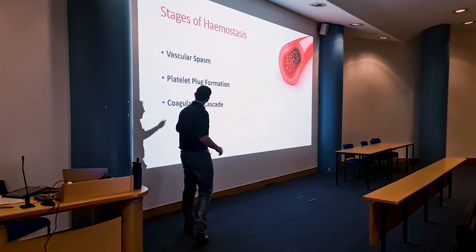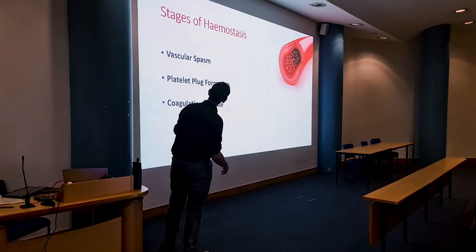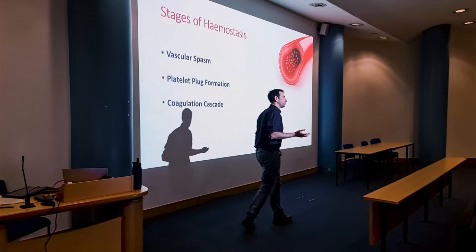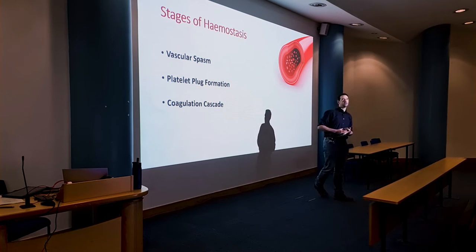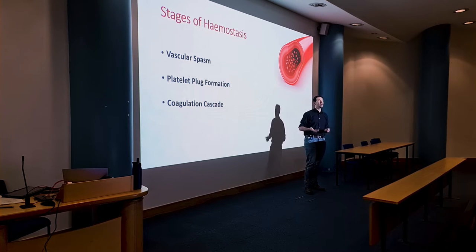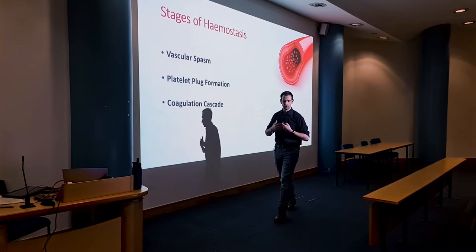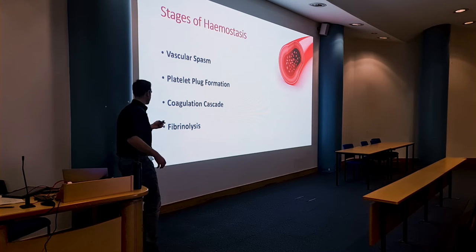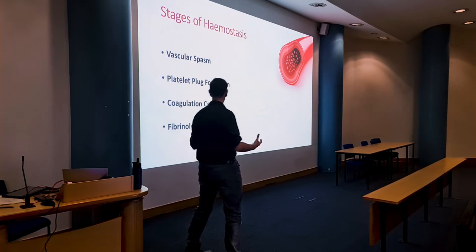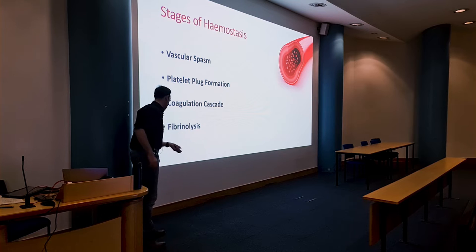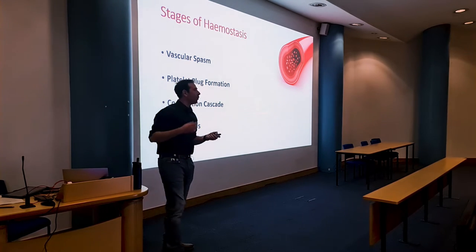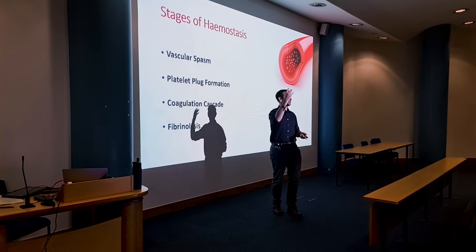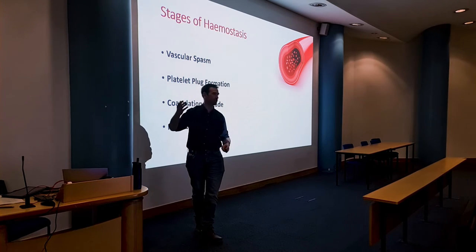Once a clot has formed, we'll need a negative feedback loop to destroy it and return to normal physiology — because clots aren't permanent. That's what we call fibrinolysis, and it's the last stage of hemostasis. Fibrinolysis safely disposes of the clot when my blood vessel is healed. You can't just kick the clot into circulation, because as we know, that can cause MIs, strokes, PEs, and DVTs.